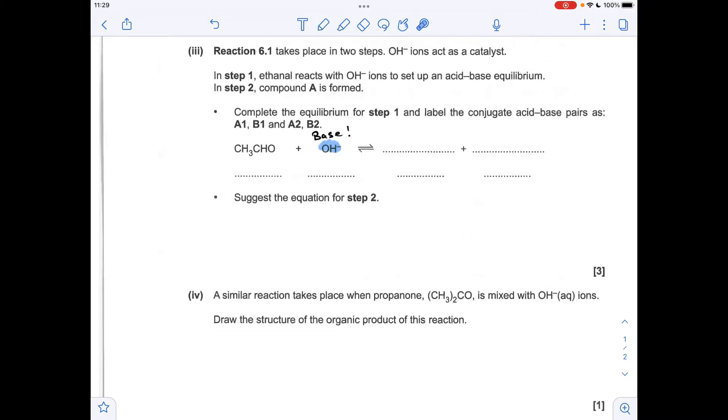Moving on to part 3. So the first bit we've got to complete this equilibrium and label up the conjugate acid-base pairs. So you'll notice I've highlighted the OH minus and the hydroxide ion. That's obviously a base. So it's going to accept an H-plus ion from the ethanol. In the process, that's going to form H2O. So there's a pair. So this is obviously the base of this pair. So I'm just calling this pair 1. This is the acid of pair 1. Moving on to the ethanol. So this has obviously donated a proton to the hydroxide ion. So this is going to act as an acid.